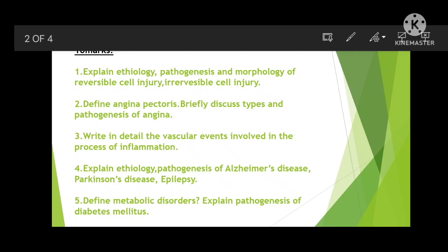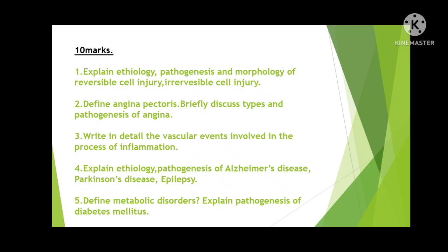Let's start with the first 10-mark question: explain etiology, pathogenesis, and morphology of reversible cell injury and irreversible cell injury. In the year 2021 they asked reversible cell injury, but this time maybe they will ask irreversible cell injury. Practice both. First write what is cell injury, then types of cell injury, morphology, etiology, pathogenesis, causes, and symptoms — maintain everything in a clean way.